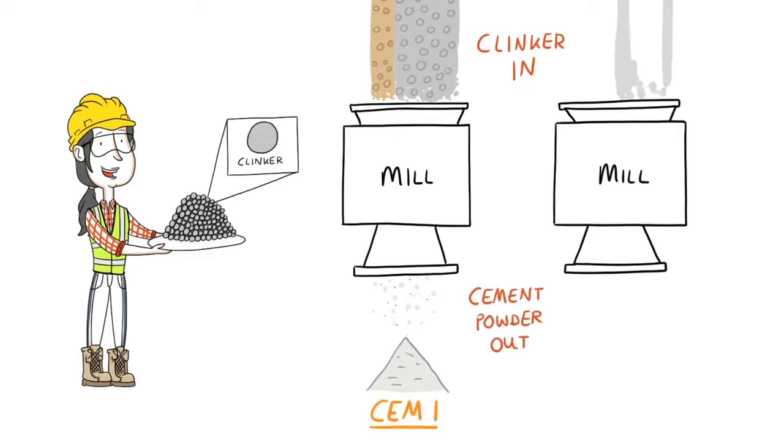We make two main cement types: CEM1, or rapid, and CEM2, an eco-efficient cement which is now the most common cement used in Ireland.